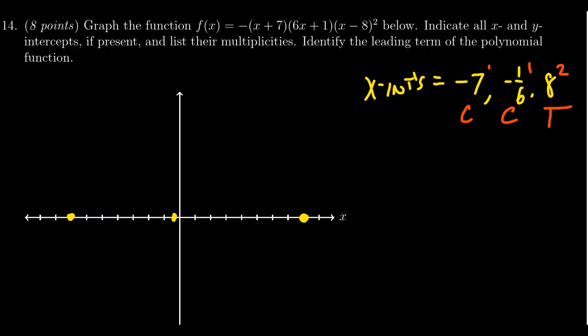And again, we should label these things. So we're going to get (8, 0). We're going to get (-7, 0). And this point right here, this is going to be (-1/6, 0). Let's label those on the picture. We could do the labels later, but that's OK. I just put them in now.